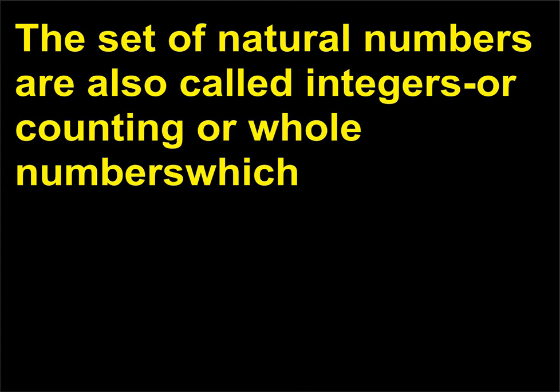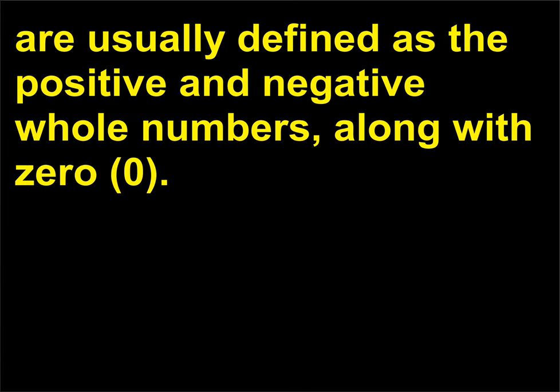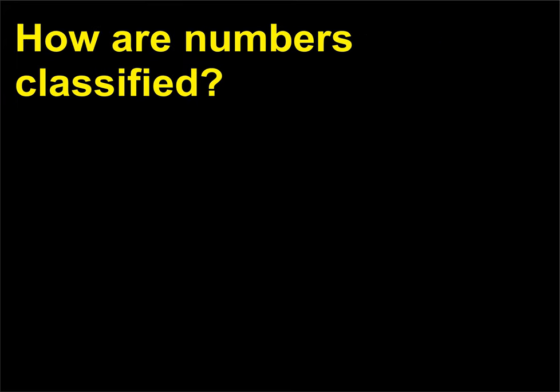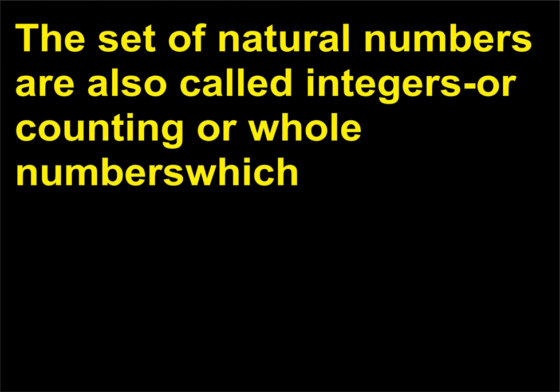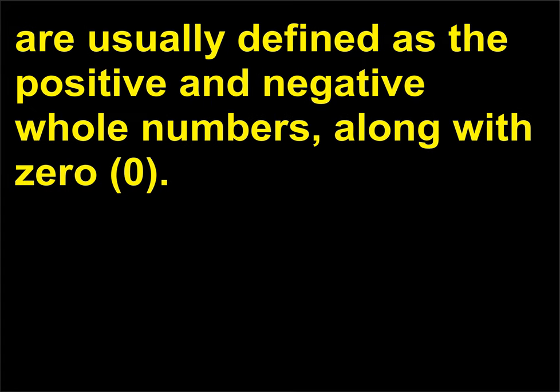How are numbers classified? The set of natural numbers are also called integers or counting or whole numbers, which are usually defined as the positive and negative whole numbers, along with 0.